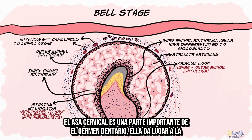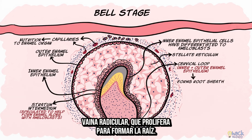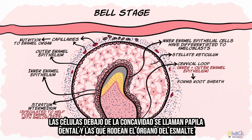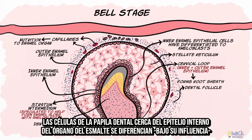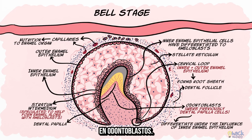The cervical loop is an important part of the tooth germ in that it gives rise to the root sheath, which proliferates to form the root. The cells below the concavity are called the dental papilla, and those surrounding the enamel organ and the dental papilla constitute the dental follicle. The dental papilla cells near the inner enamel epithelium differentiate under their influence to become odontoblasts.